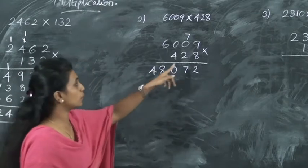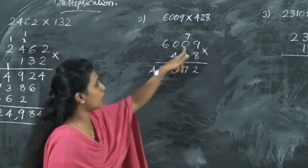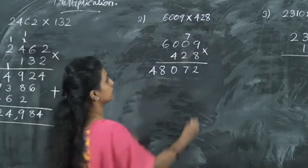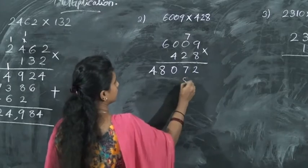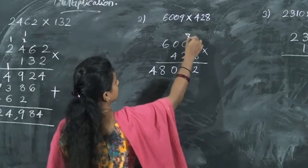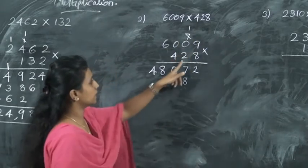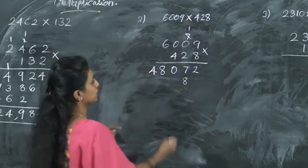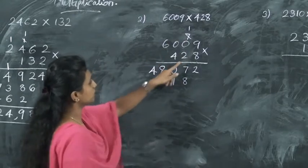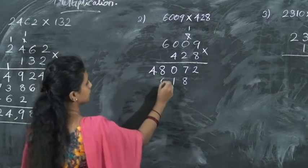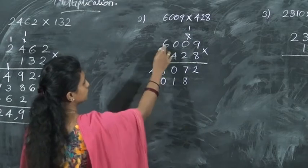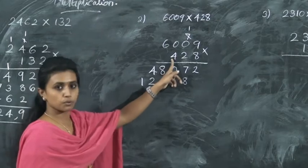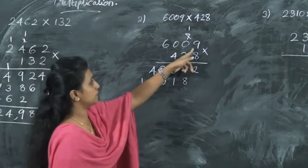Now the next step: multiply this 2 with all these numbers. So 2 nines are 18 — write 8 here, 1 is carried over. Then 2 zeros are 0 plus 1 comes 1. Then 2 zeros are 0. Then 2 sixes are 12.